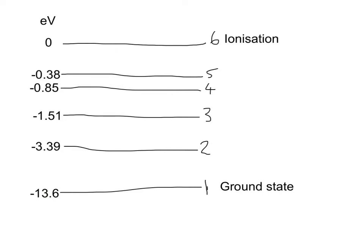Let's say something has given this atom energy. If it's sat in its ground state quite happily, something excites the atom and gives it energy — we can use that as a technical term. When we're giving an atom energy, we can refer to it being excited. Let's say something gives it enough energy, not enough to ionize it, but to take it up from energy level one to energy level three. The arrow shows that transition moving up from energy level one to three.